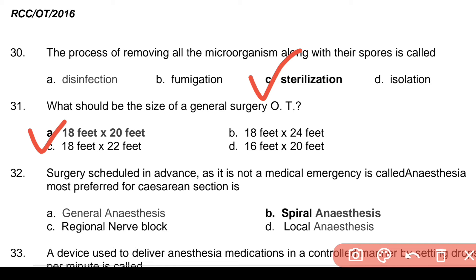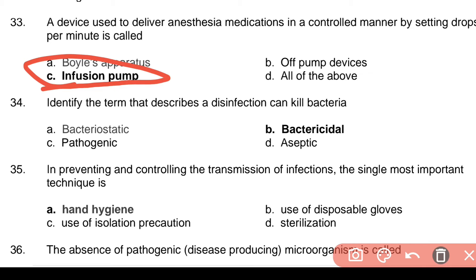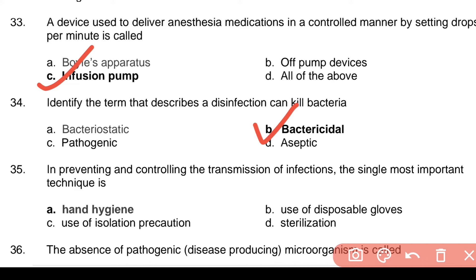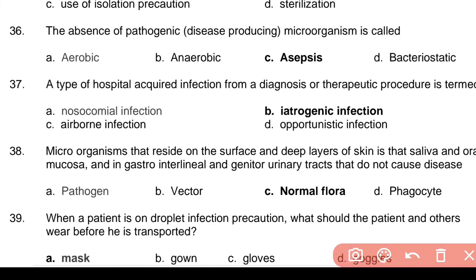Question 31: What should be the size of a general surgery OT? Answer: a. 18 feet by 20 feet. Question 32: Surgery scheduled in advance as it is not a medical emergency. Question 33: Anesthesia most preferred for caesarean section — Answer: b. Spinal anesthesia. Question 34: The device used to deliver anesthesia medications in a controlled manner by setting drops per minute — Answer: c. Infusion pump. Question 35: A disinfectant that can kill bacteria — Answer: b. Bactericidal.